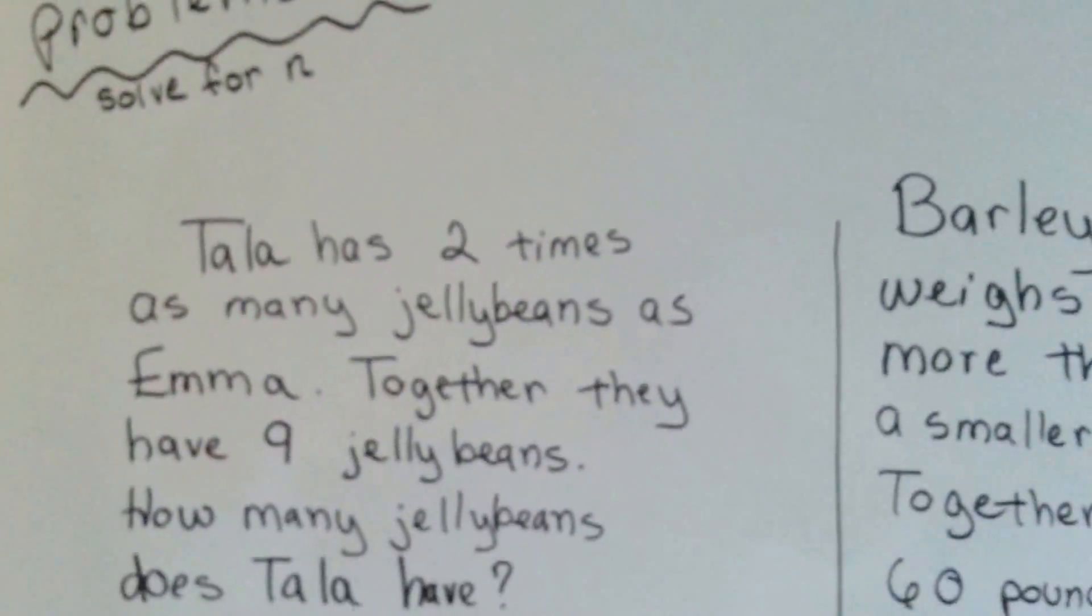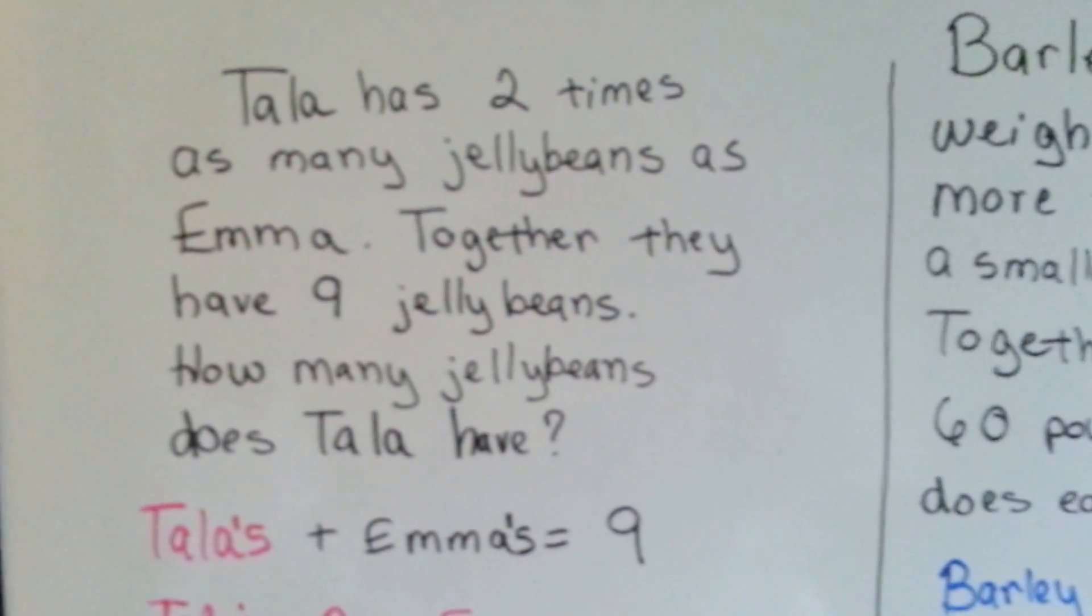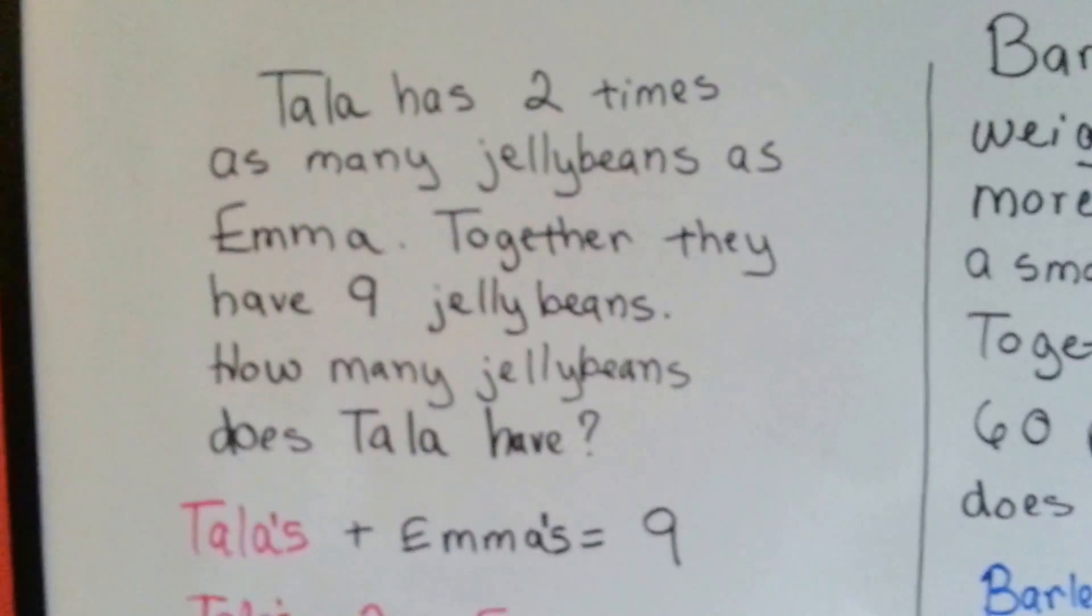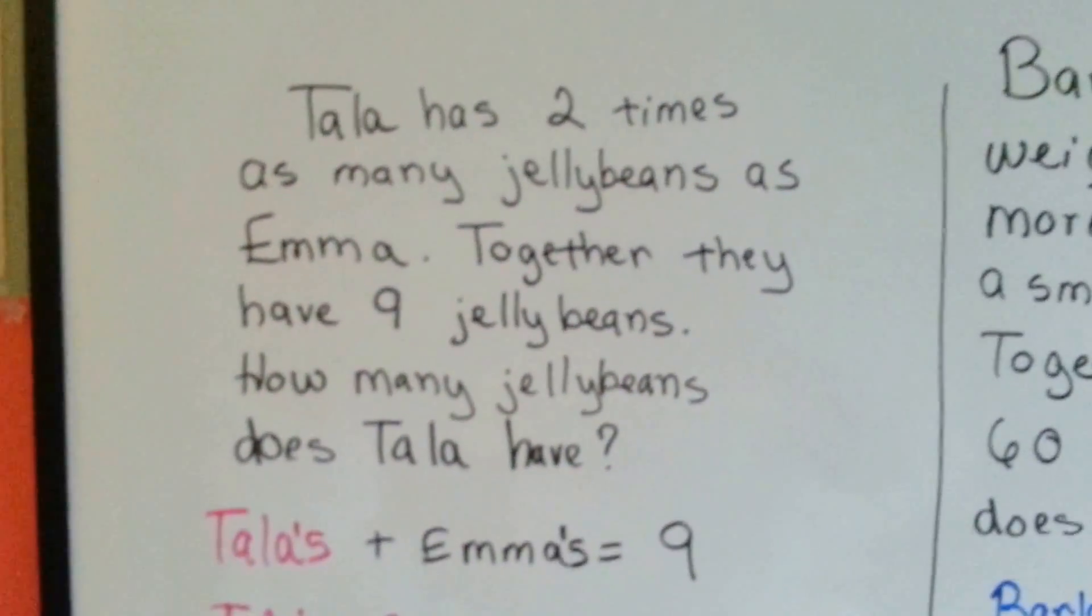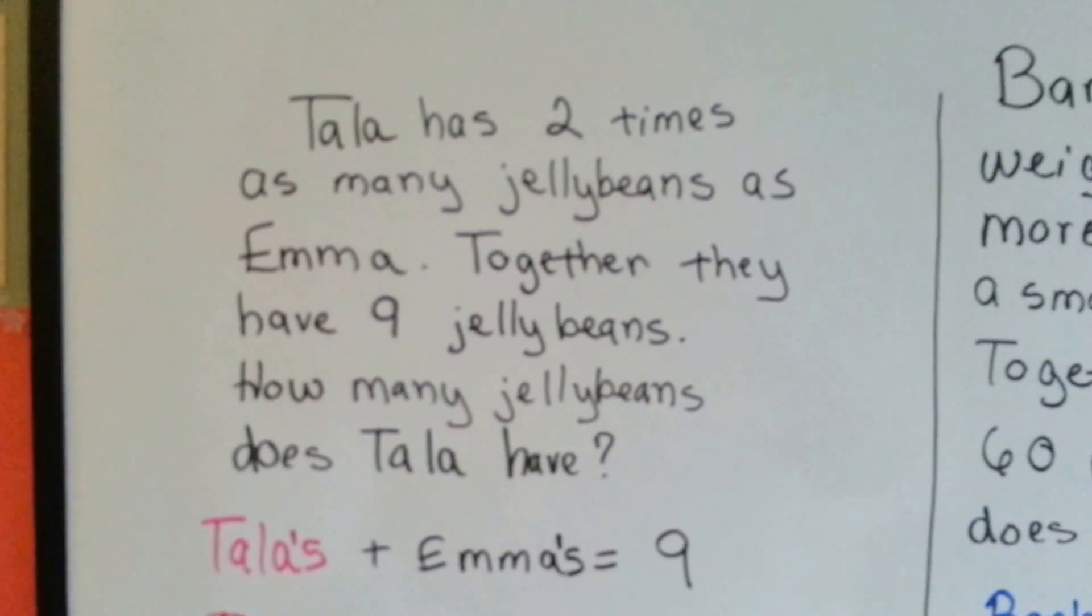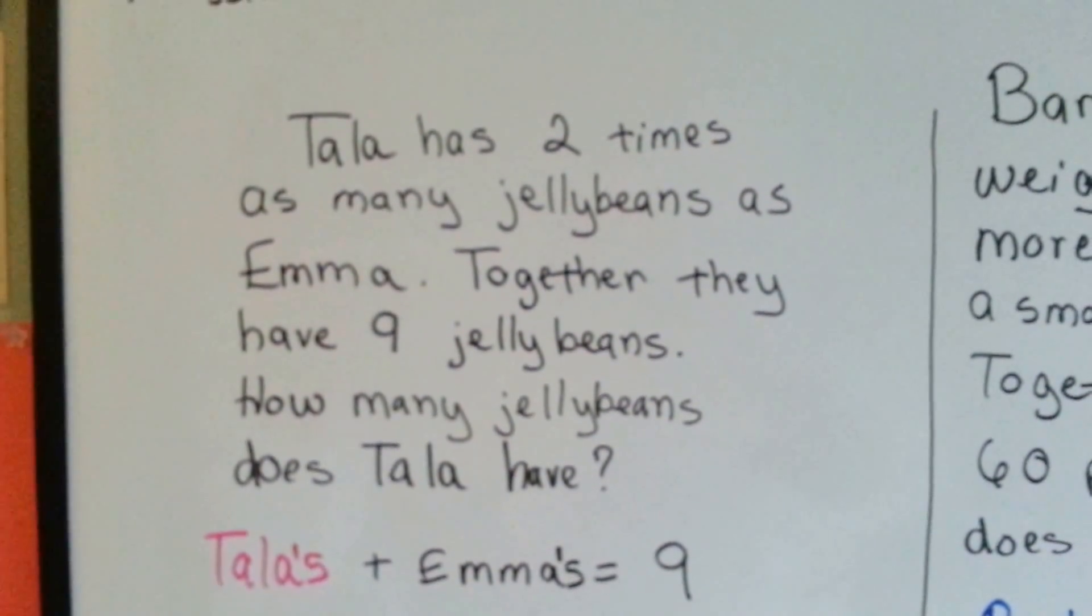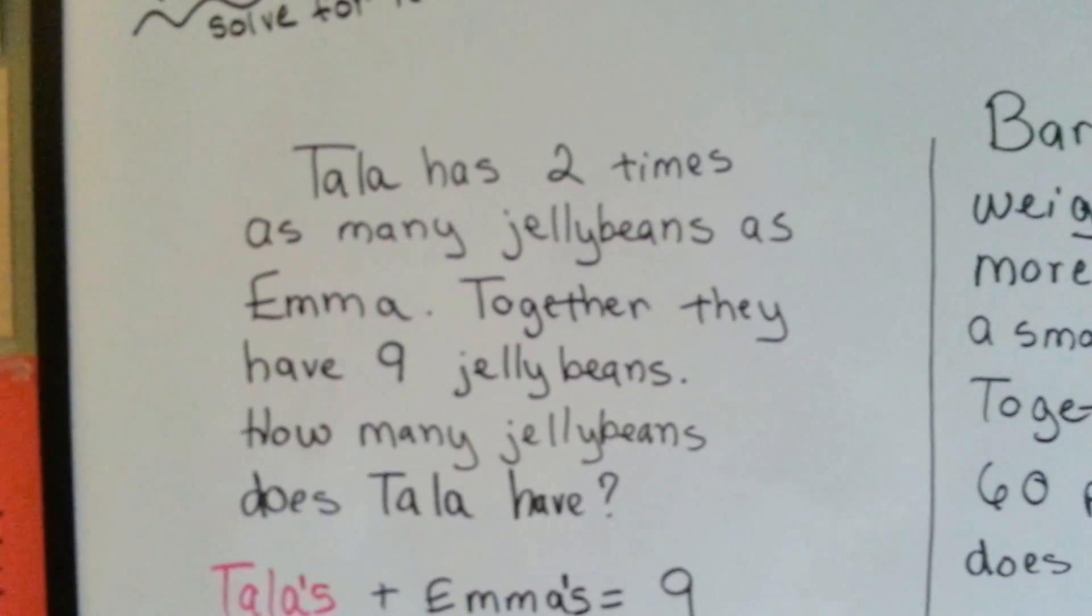I'm going to do this with multiplication. I've got some problems here that I'm going to help solve with you. We have Tala has two times as many jelly beans as Emma. Together they have nine jelly beans. So how many jelly beans does Tala have?